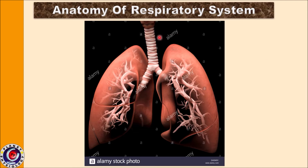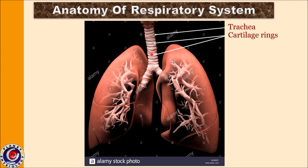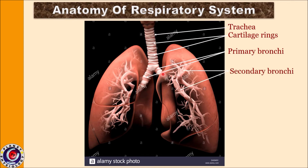After the larynx begins the trachea, which is always kept in a patent state with the help of cartilaginous rings. The trachea divides into two primary bronchi — one goes to the right and one to the left side of the body. Singular is bronchus and plural is bronchi. This division takes place at the level of T5, the fifth thoracic vertebra. Each primary bronchus divides into secondary bronchi.